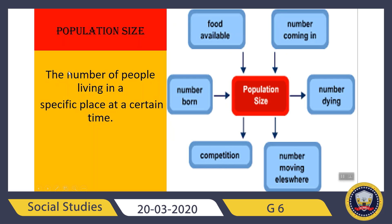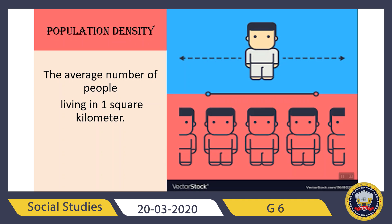Next is Population Size. The number of people living in a specific place at a certain time is called Population Size. Next we have Population Density.